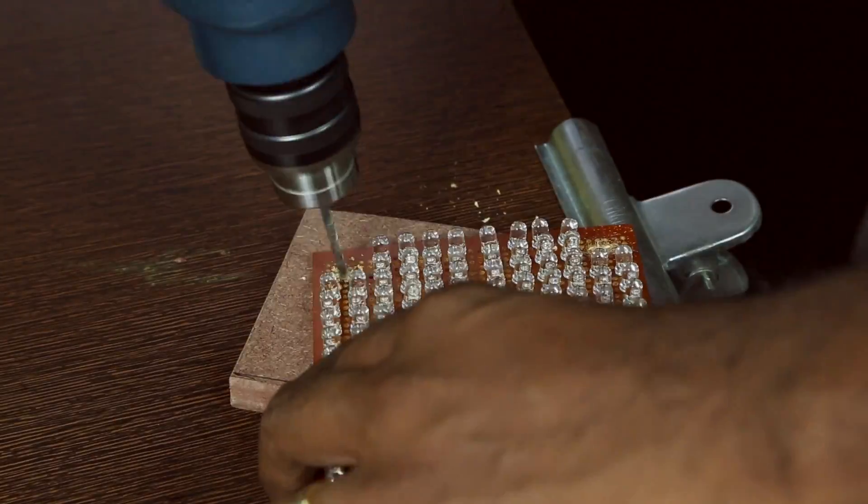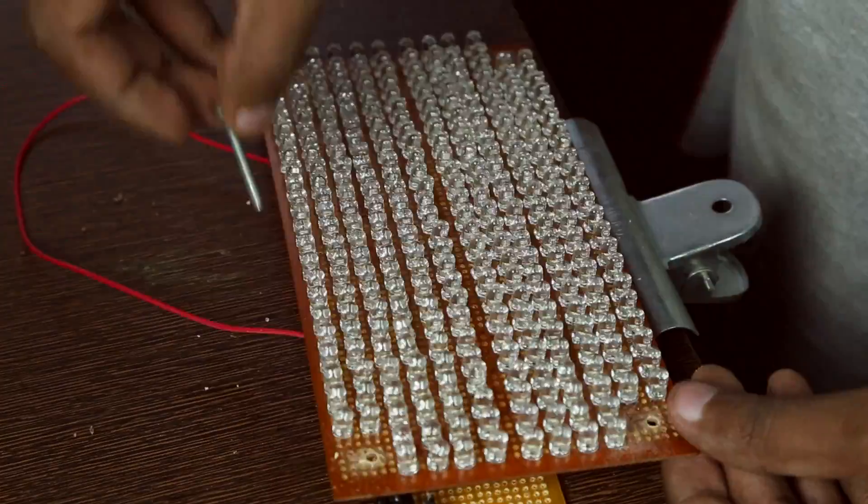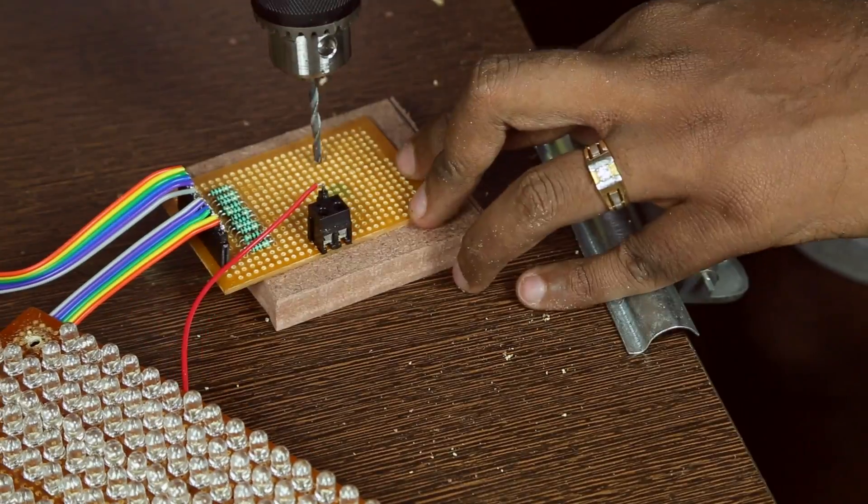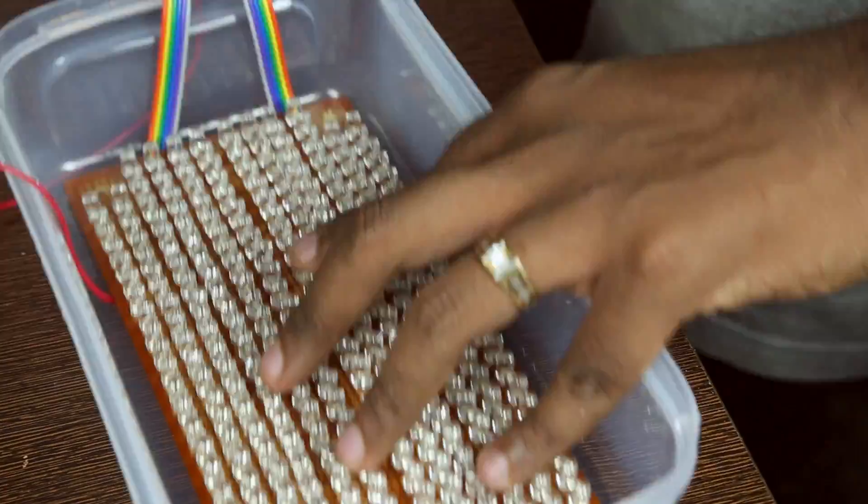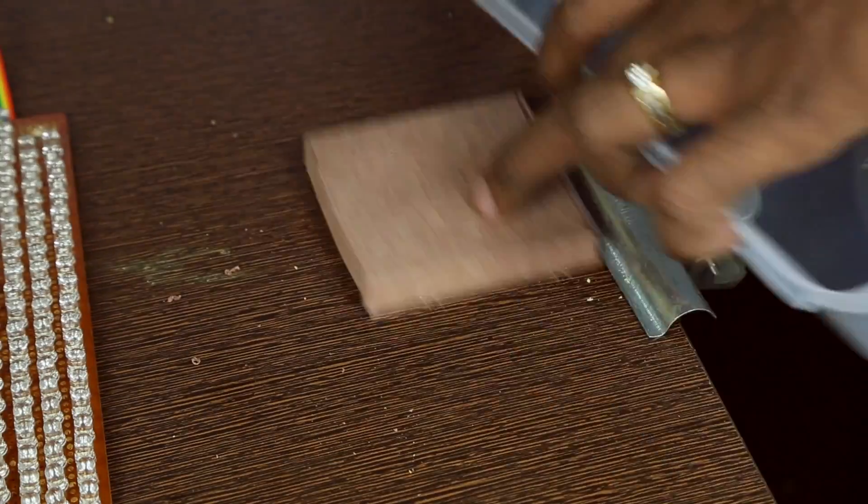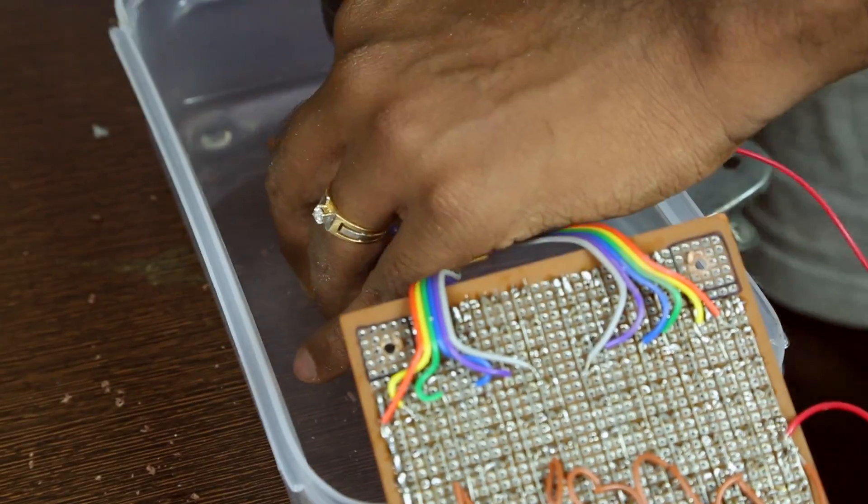First, I drilled holes on the four corners of the board. I check the size of the hole with the screw I am going to use. Similarly, I drilled holes on the connecting PCB too. Then using the board as a template, I make some pilot holes into the box. Then I drill them out. I do the same for the connecting PCBs too.